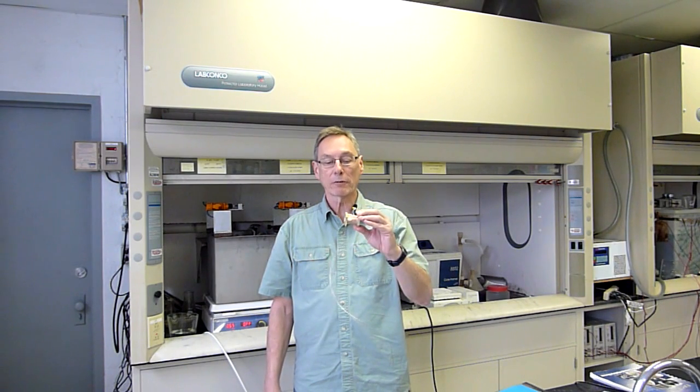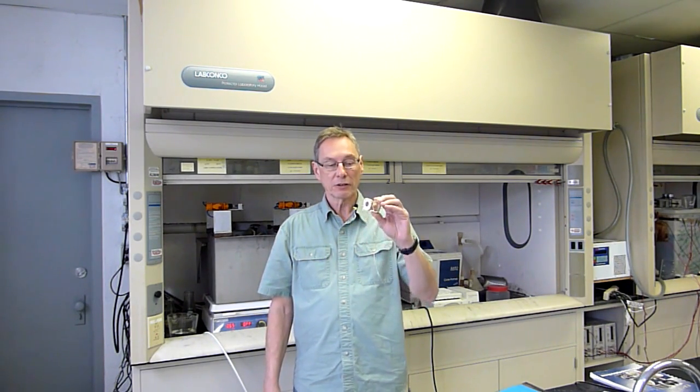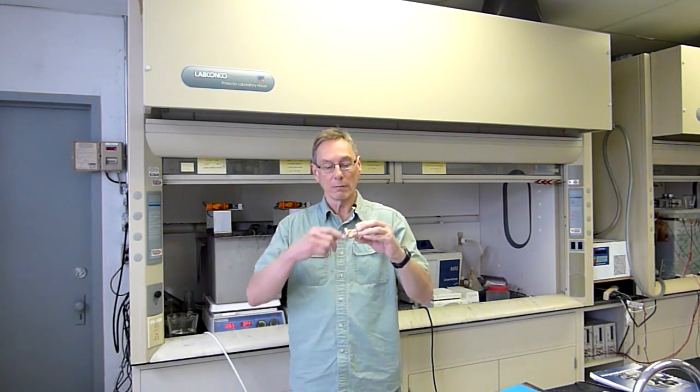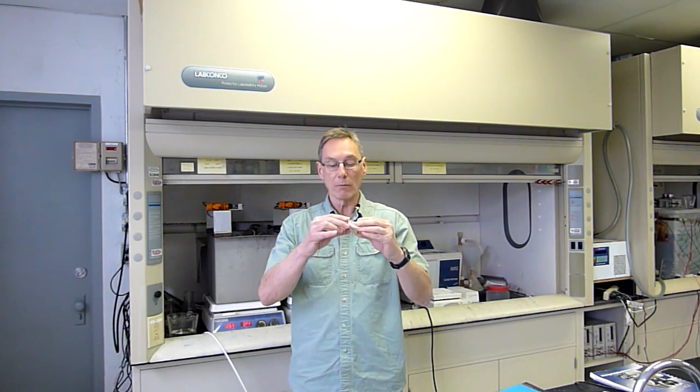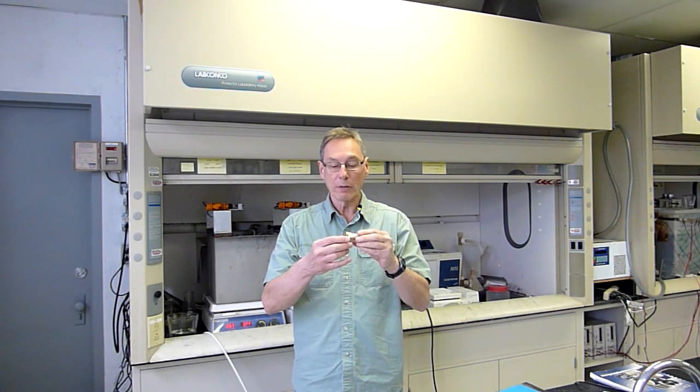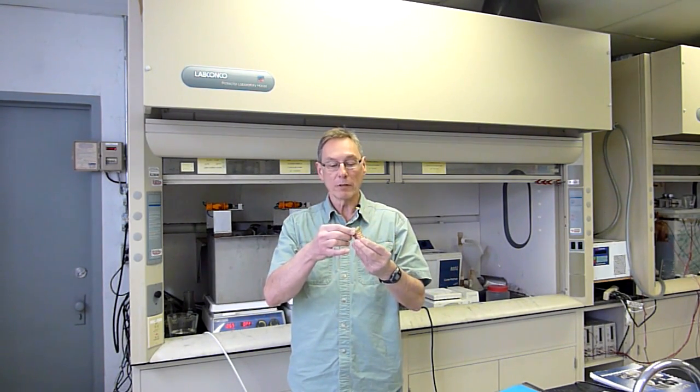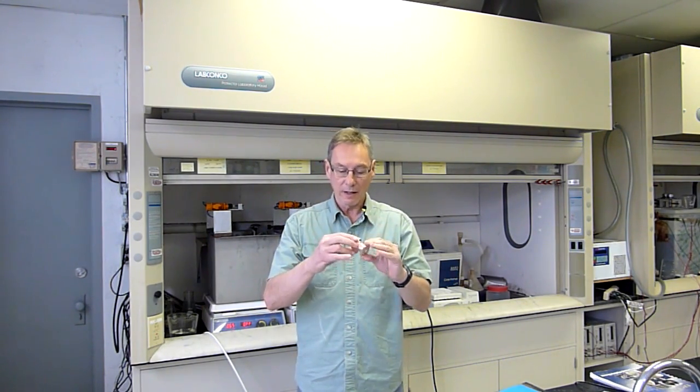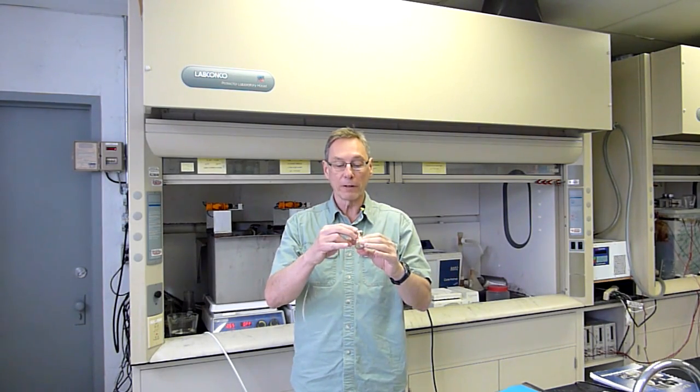We're going to be working on a copper electroform piece today. This is something that we electroformed here in the lab. It started with an aluminum mandrel, plated up a few tenths of an inch of copper around the aluminum mandrel, then goes to the machine shop where they cut off the ends. They machine the two brass flanges that are soldered on to either end of the electroform, and then it comes back to us for the final finishing work.